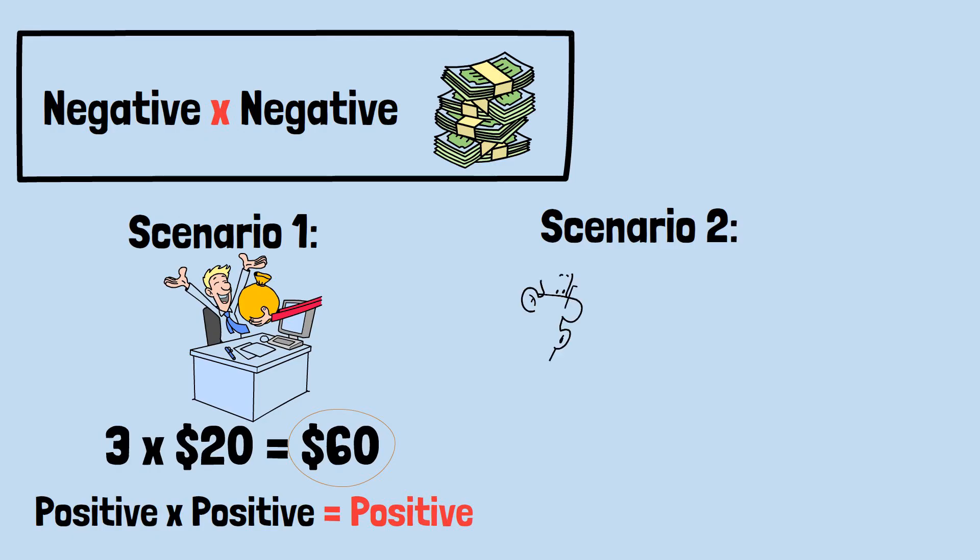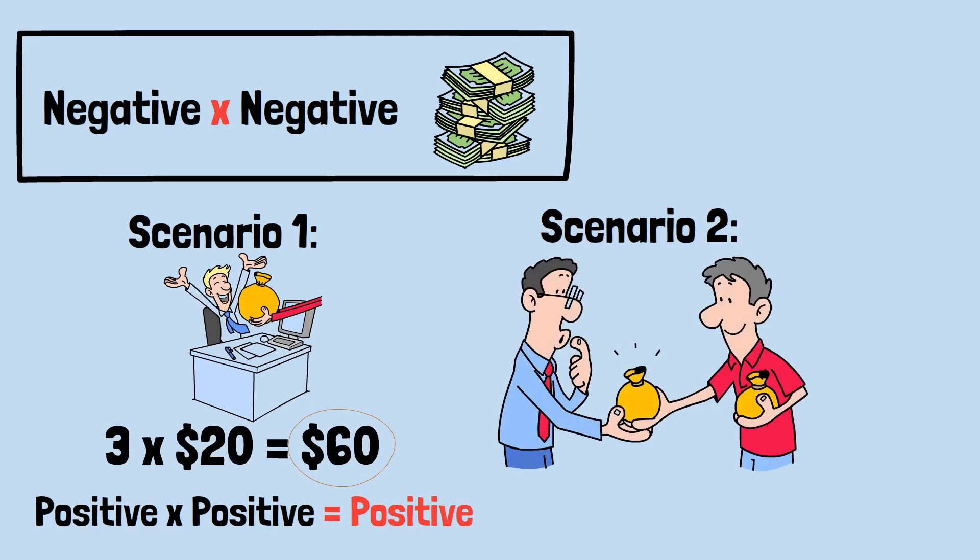Scenario 2. I take away three of your $20 bills. Mathematical representation: (-3) × $20 = -$60. Your wealth decreases by $60. This represents negative × positive = negative.